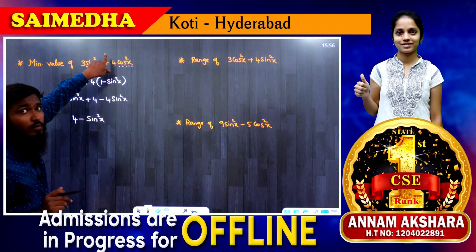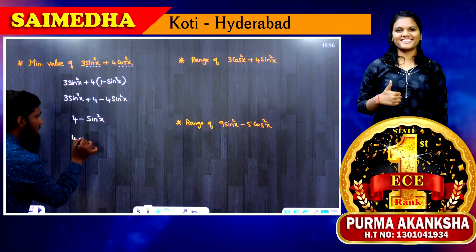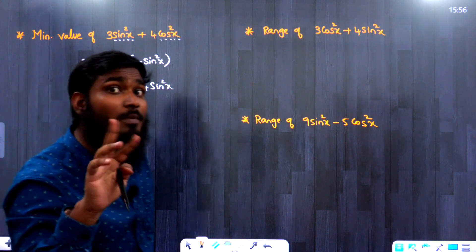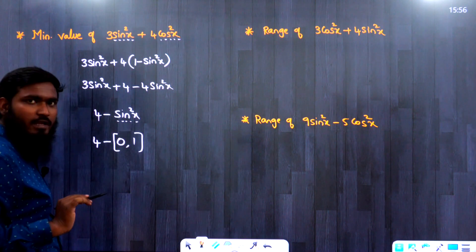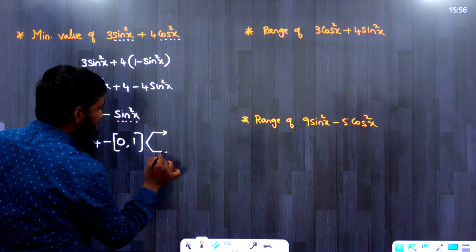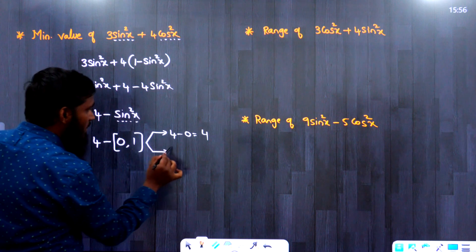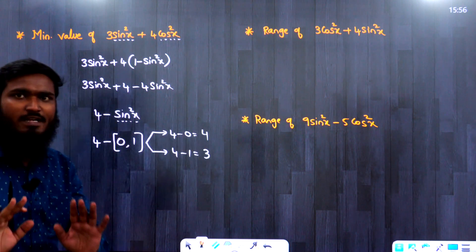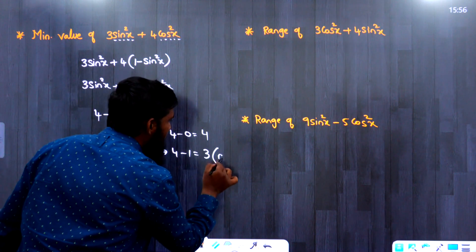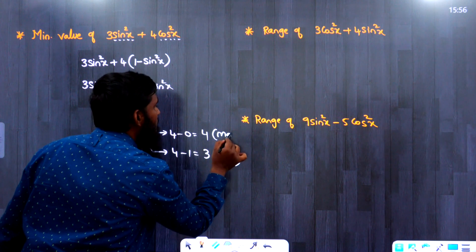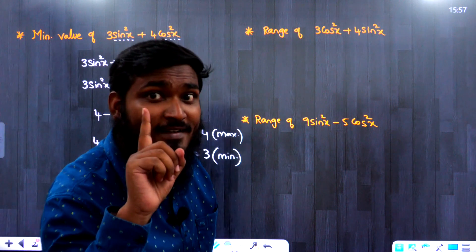We have now converted the expression into one function: 4 − sin²x. Since sin²x takes values in [0, 1], we get two cases: 4 − 0 = 4 and 4 − 1 = 3. From these two answers, the minimum value is 3 and the maximum value is 4.